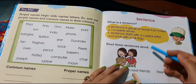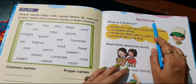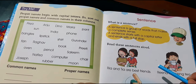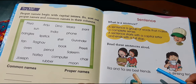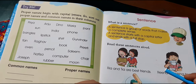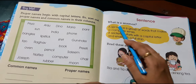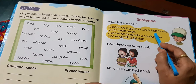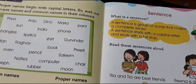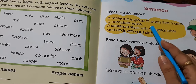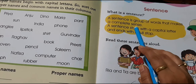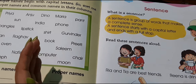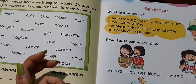Today we are going to start a new topic: Sentence, S-E-N-T-E-N-C-E. Sentence means 'Vaakke banana.' We have learned in Hindi how to make a Vaakke. In English we call it a Sentence. A Sentence is a group of words that makes a complete sense — a meaningful Vaakke, jiska koi matlab nikalta ho. We call it a Sentence.